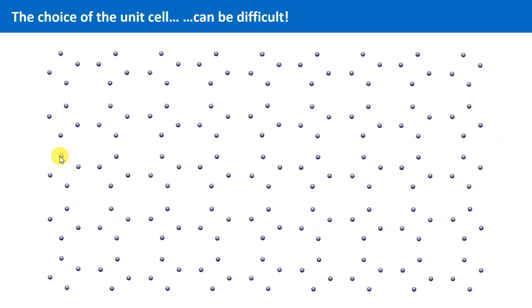Sometimes it is not easy to find an appropriate unit cell according to the rules we spoke about. As an optional exercise, you can try to find the smallest unit cell of the following lattice. You will find a link to instructions right next to the video.